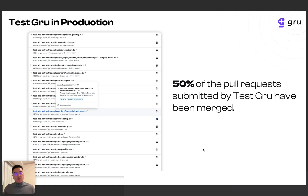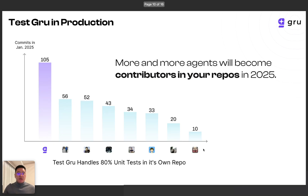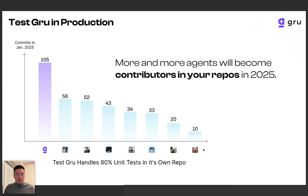Let's look at the performance of guru in production. This is also a screenshot from GitHub — a list of pull requests. As you can see, over 50% of the pull requests are merged and accepted by humans. 50% is not a very large figure, and there is a lot of room for improvement. But in real life, 50% is already meaningful in production and helps solve a lot of problems. Also, guru handles around 80% of the unit tests itself in its own repo — we use guru every day, and most of our tests are generated by it. From the commit counts you can see, guru is already the first contributor in our team. We believe more and more agents will become contributors in people's repos this year, 2025.